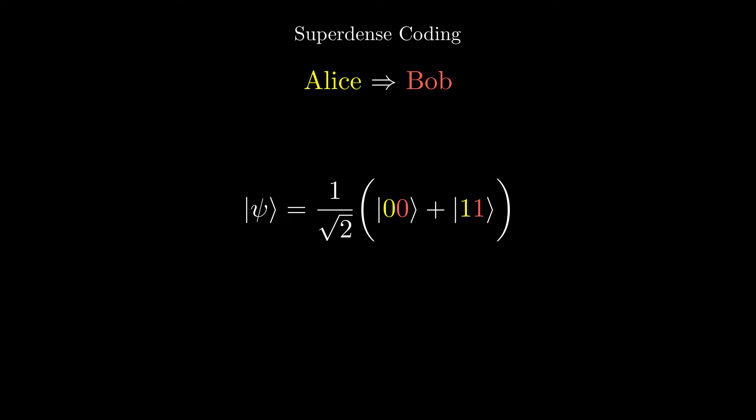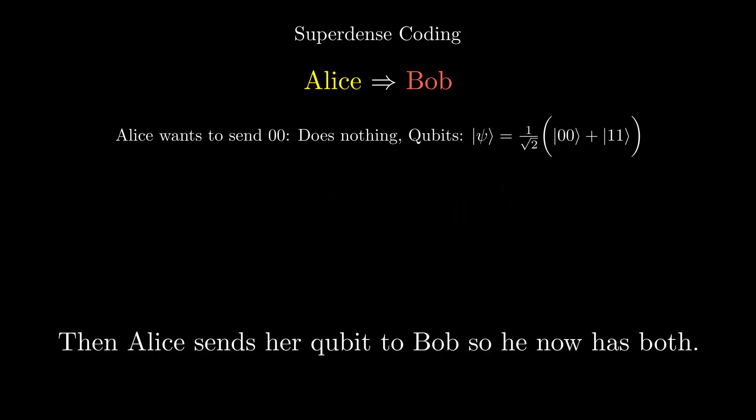If Alice wants to send the two classical bits 00, she does nothing and sends her qubit to Bob. If Alice wants to send 01, she applies an X gate to her qubit, transforming the qubits to this state, then she sends her qubit to Bob.